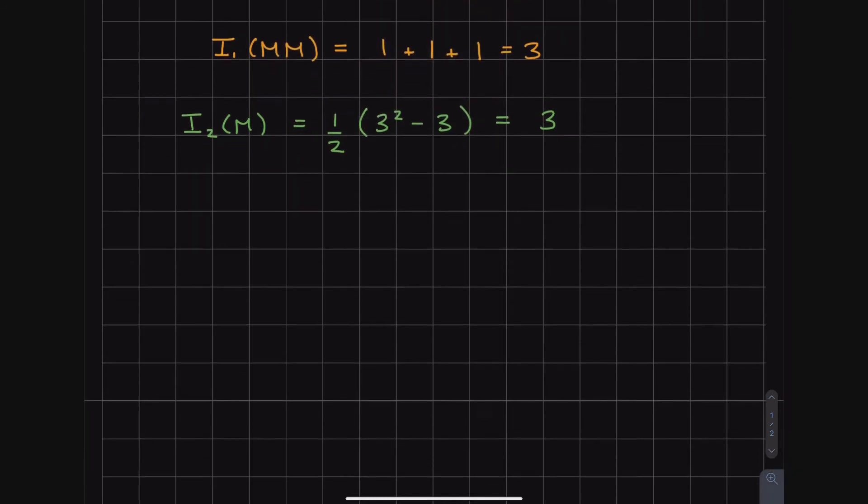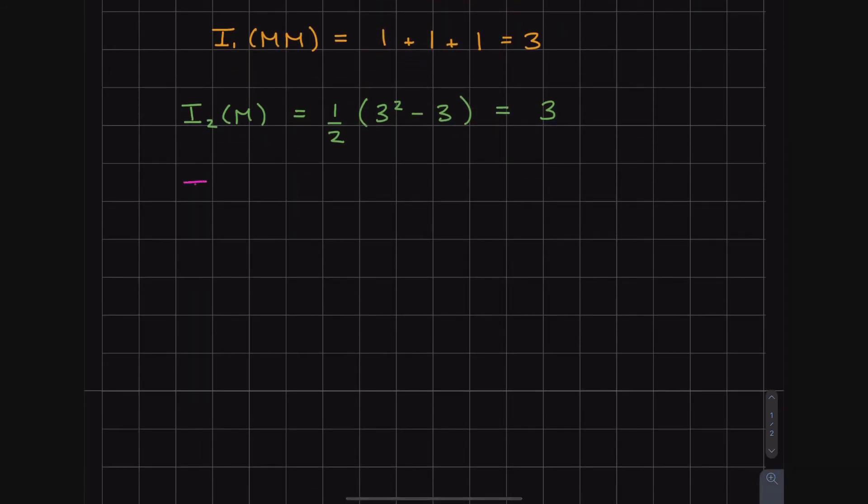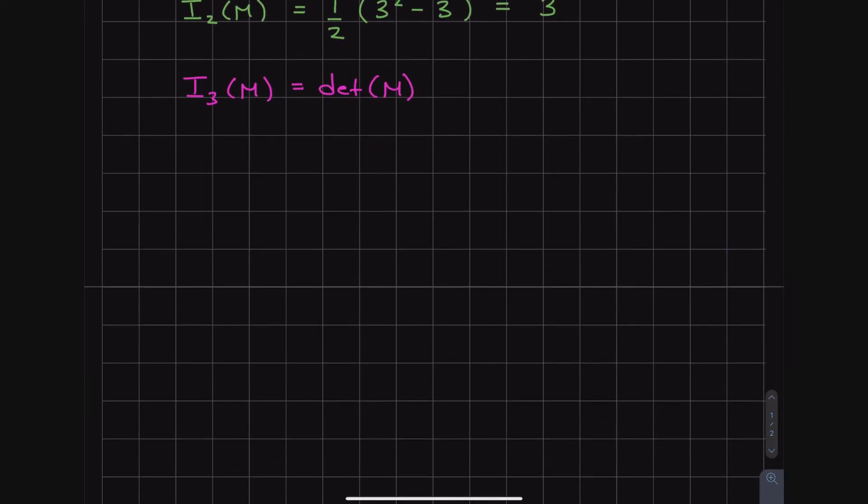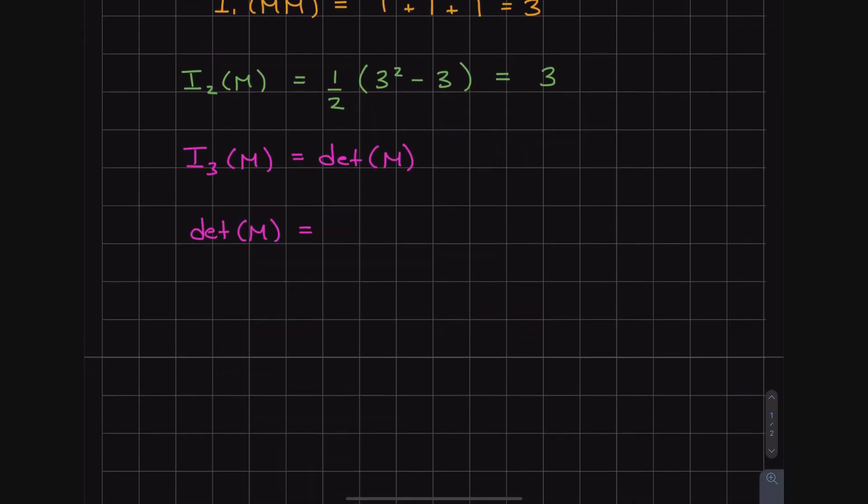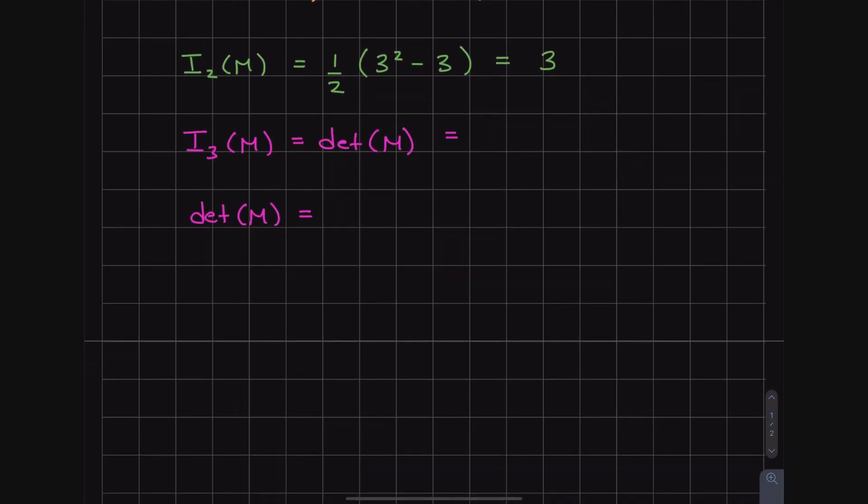So right then and there, we found invariant 1 of M is equal to 3. Invariant 2 of M is equal to 3. This is kind of a coincidence. Don't always think that I1 is equal to I2. Not always the case. More of a coincidence.